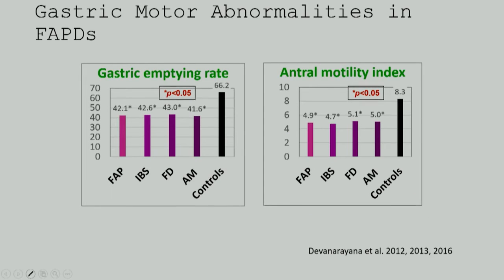We conduct motility studies at our centre. What we found basically was that these children have abnormal motility in their upper GI tract — their gastric emptying rate is abnormal in all four types, and their antral motility index is abnormal. These are non-invasive tests done through ultrasound, and they are an easy way to convince people that the child has a functional problem rather than an organic issue.